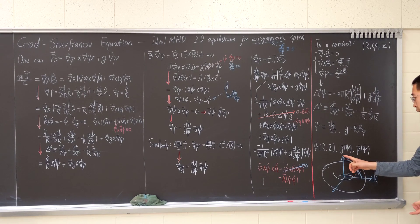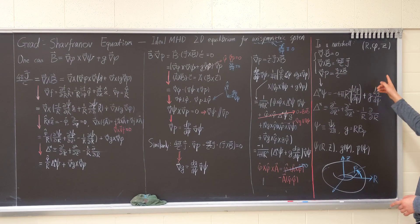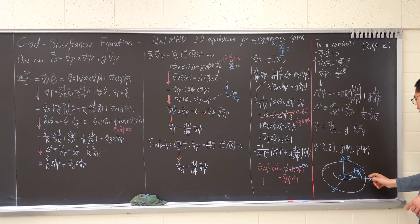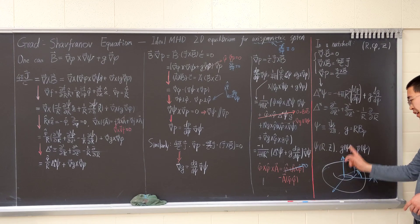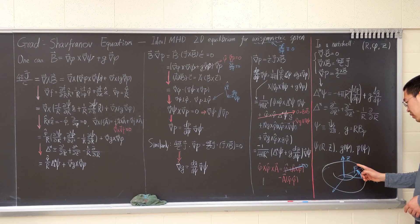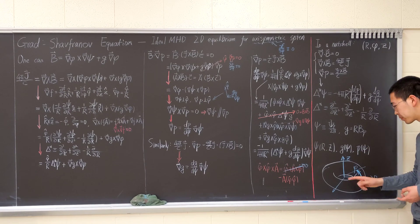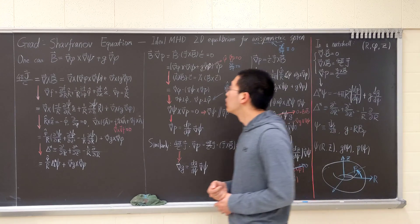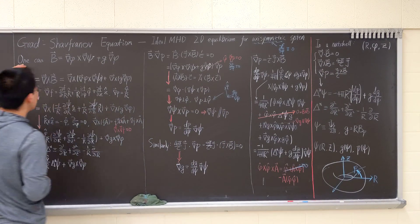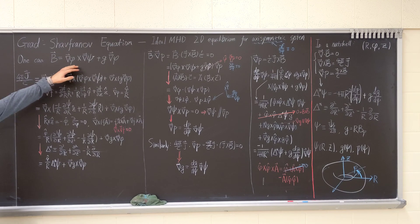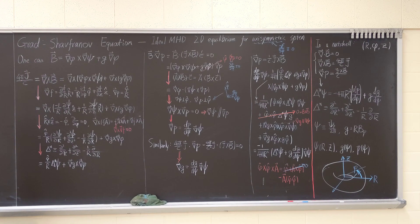The setup uses cylindrical coordinates: R, z, phi. Z is the height, R is the major radius, and phi is the toroidal angle. The center is basically the center of the donut. As you'll remember, the magnetic field can be expressed in terms of this form — you can check the flux representation of the magnetic field.